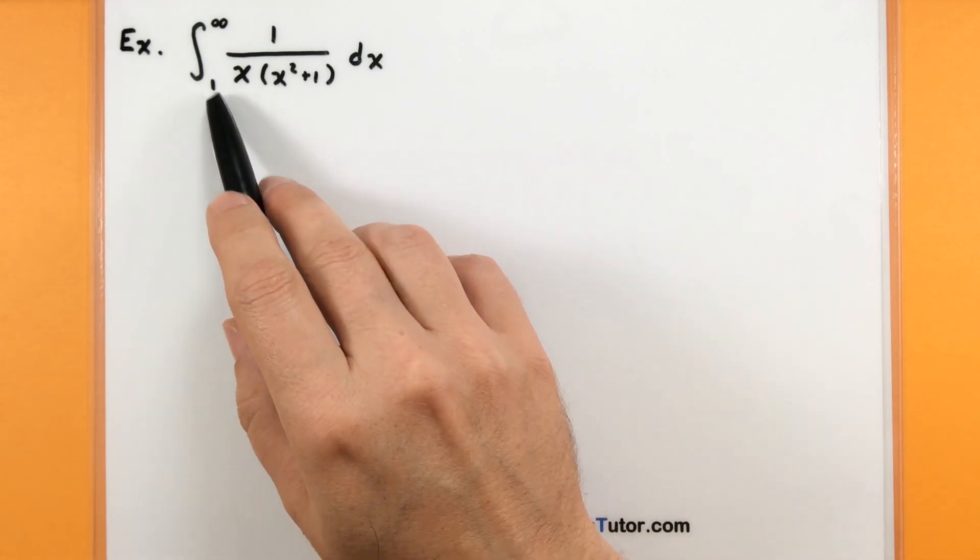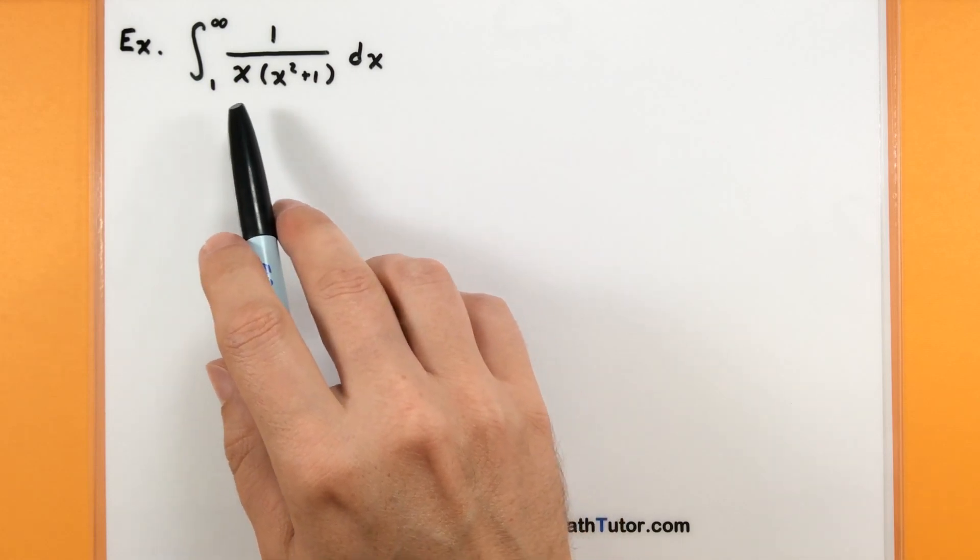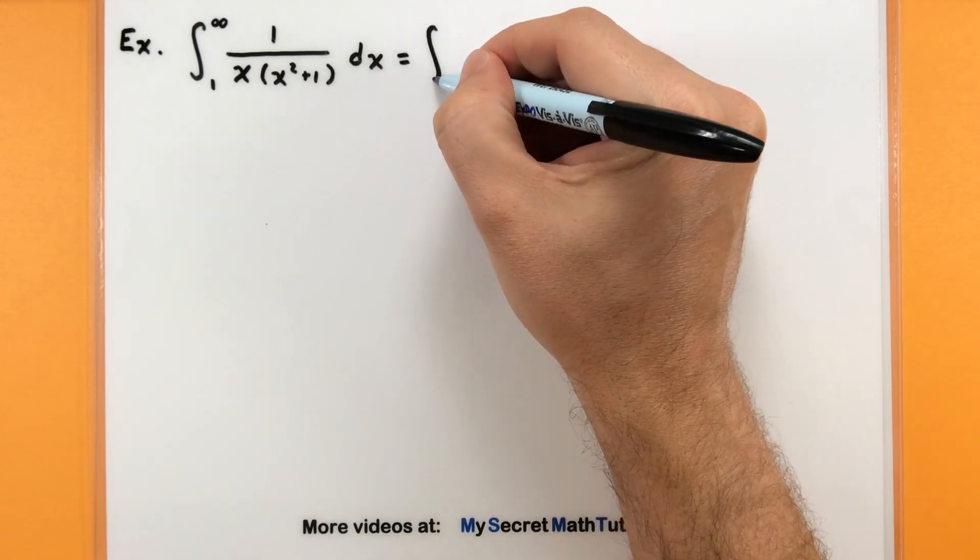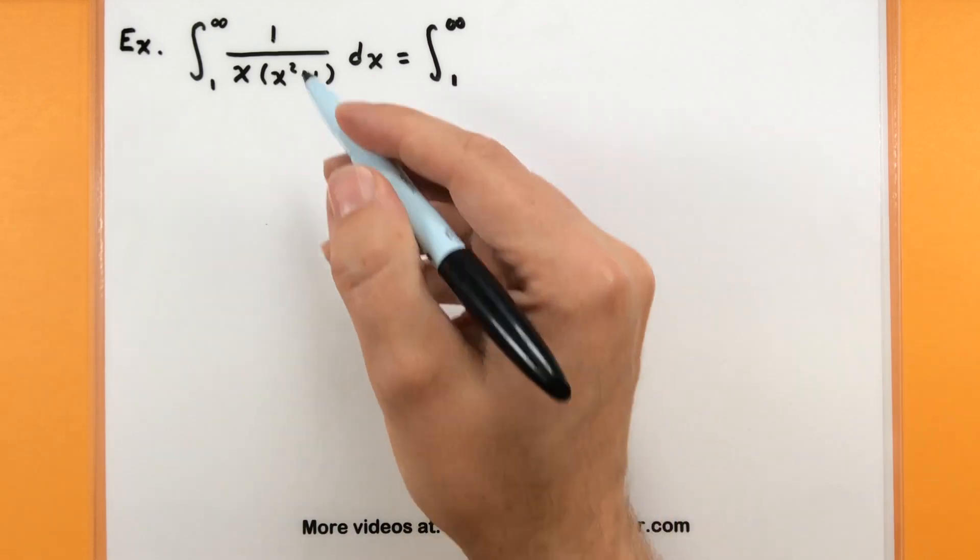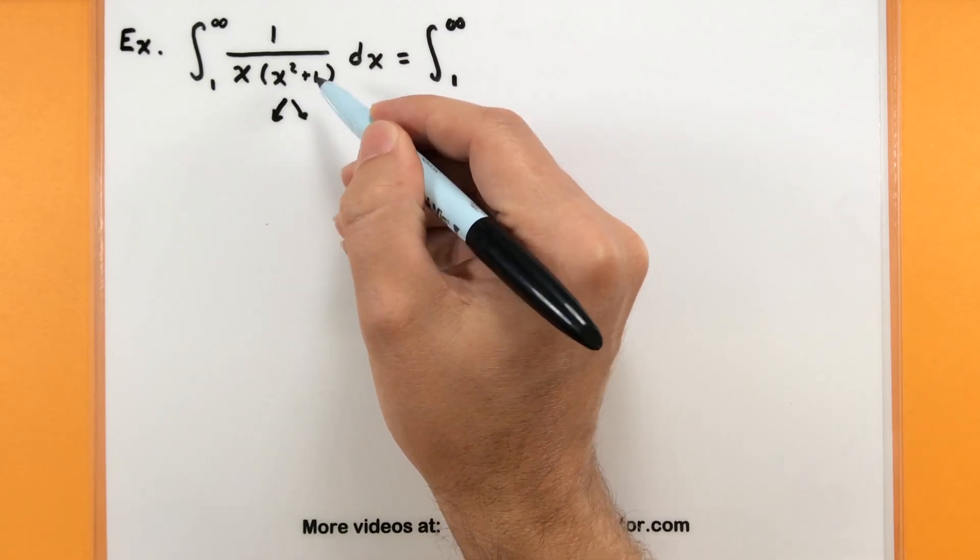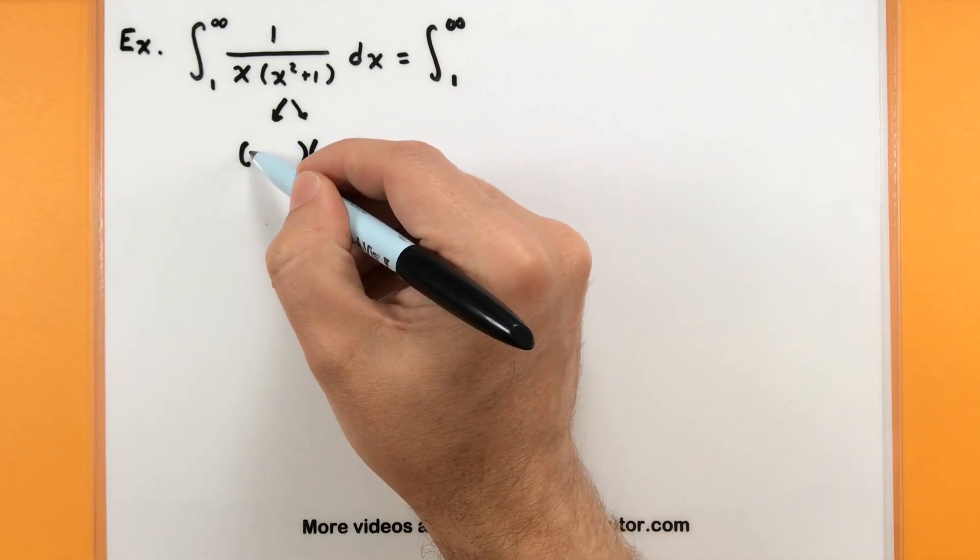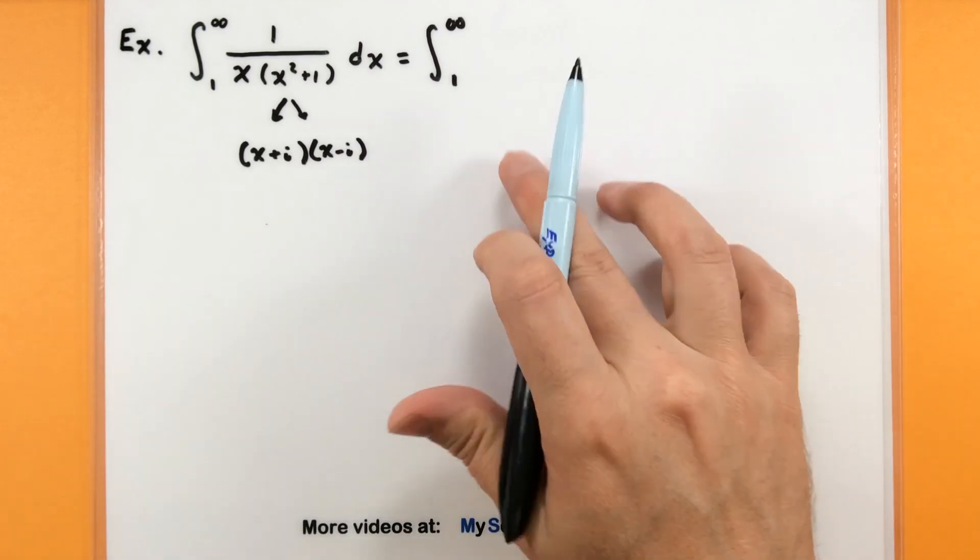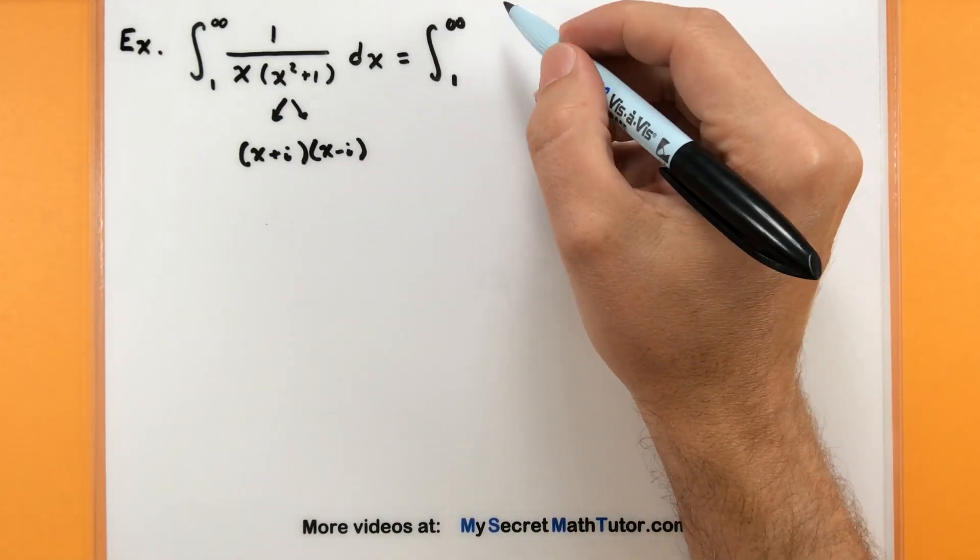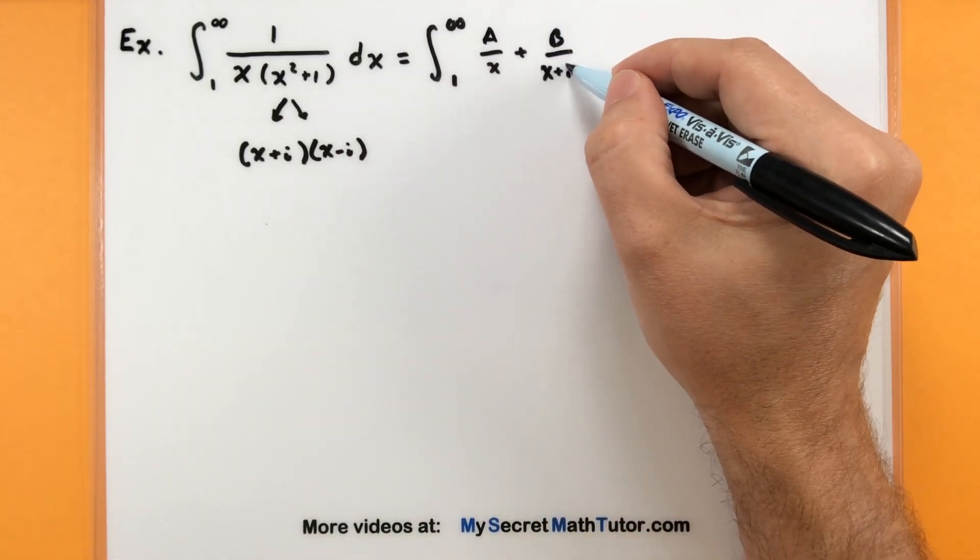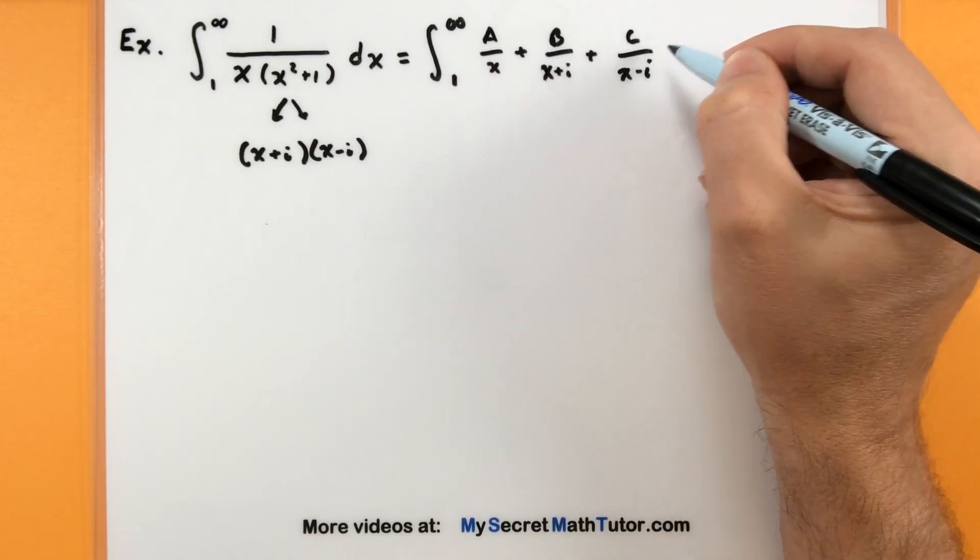We're going to do the integral of one to infinity of one over x multiplied by x squared plus one. So that x and x squared plus one, all of that is in the denominator. And we're going to go through a technique of partial fraction decomposition. The idea with this is we're going to break up our fraction into lots of smaller fractions. Now, here's where I can take advantage of the imaginary number i here. This, if I want to factor it into some linear factors, would factor into x plus i and x minus i.